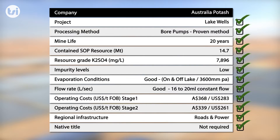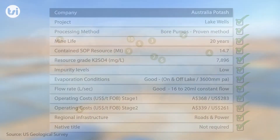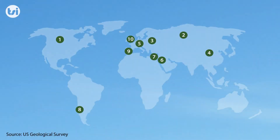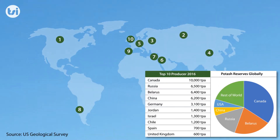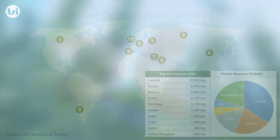The major reserves and producers of potash are located in Canada, Northern Europe and Russia. However, like many other commodities, the future demand for SOP is driven by China.